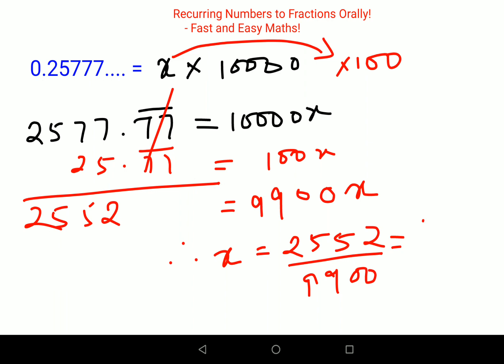This can be further reduced because both of them are even numbers, so I'll get 1276, and this will come out to be 4,950.